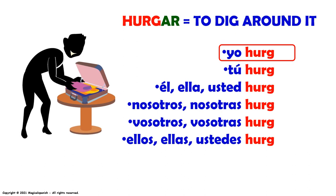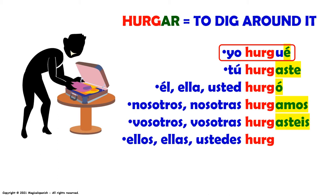Comenzamos con el verbo hurgar. Yo hurgué. Tú hurgaste. Él, ella, usted hurgó. Nosotros, nosotras hurgamos. Vosotros, vosotras hurgasteis. Ellos, ellas, ustedes hurgaron.